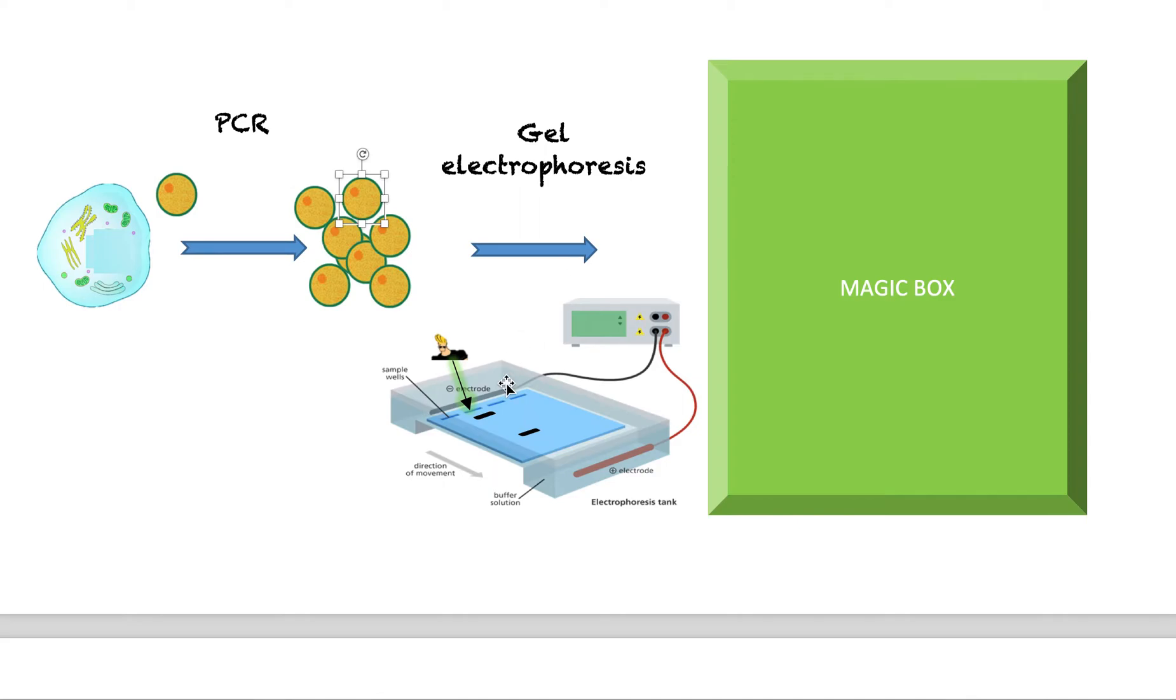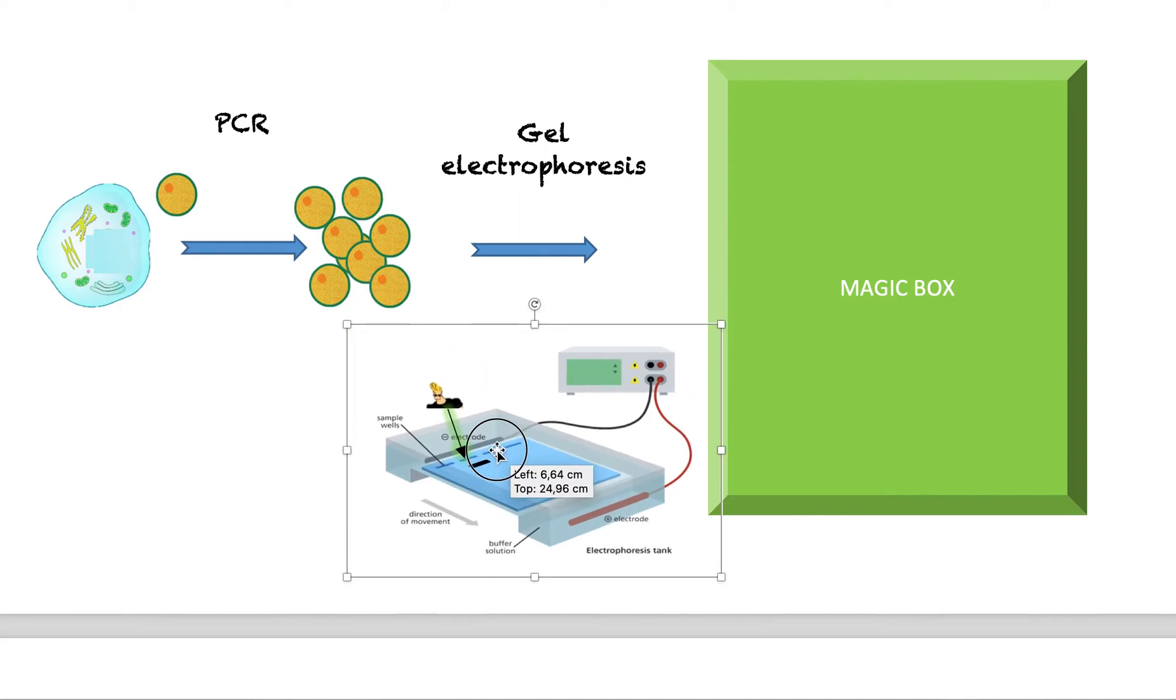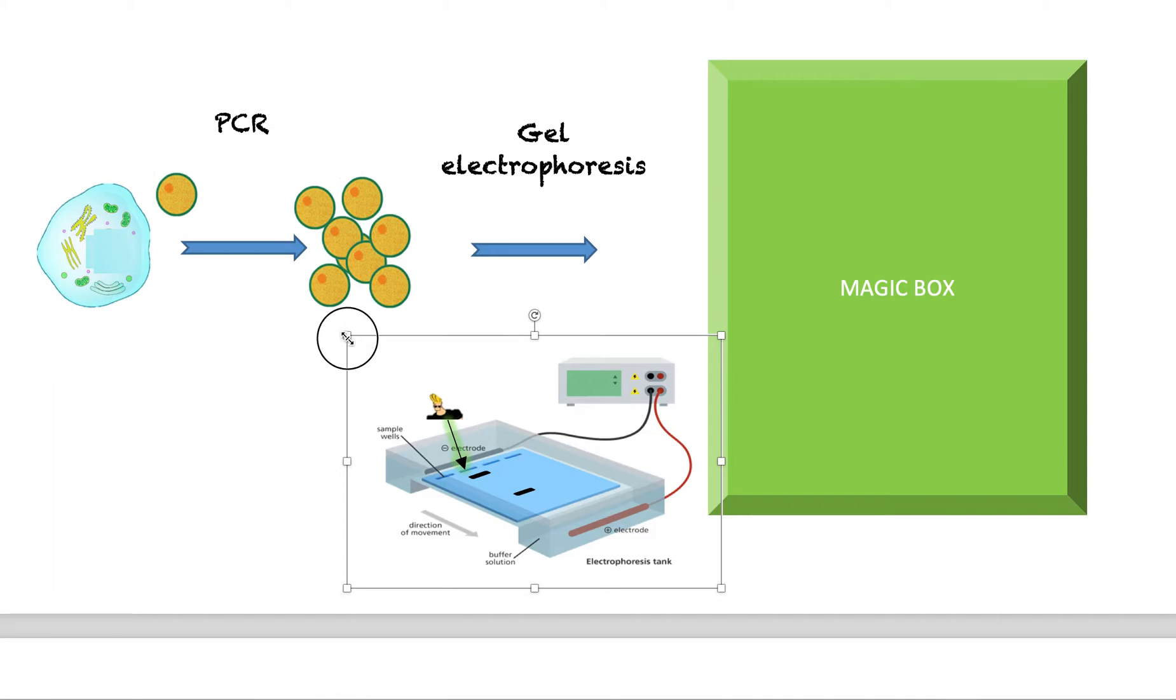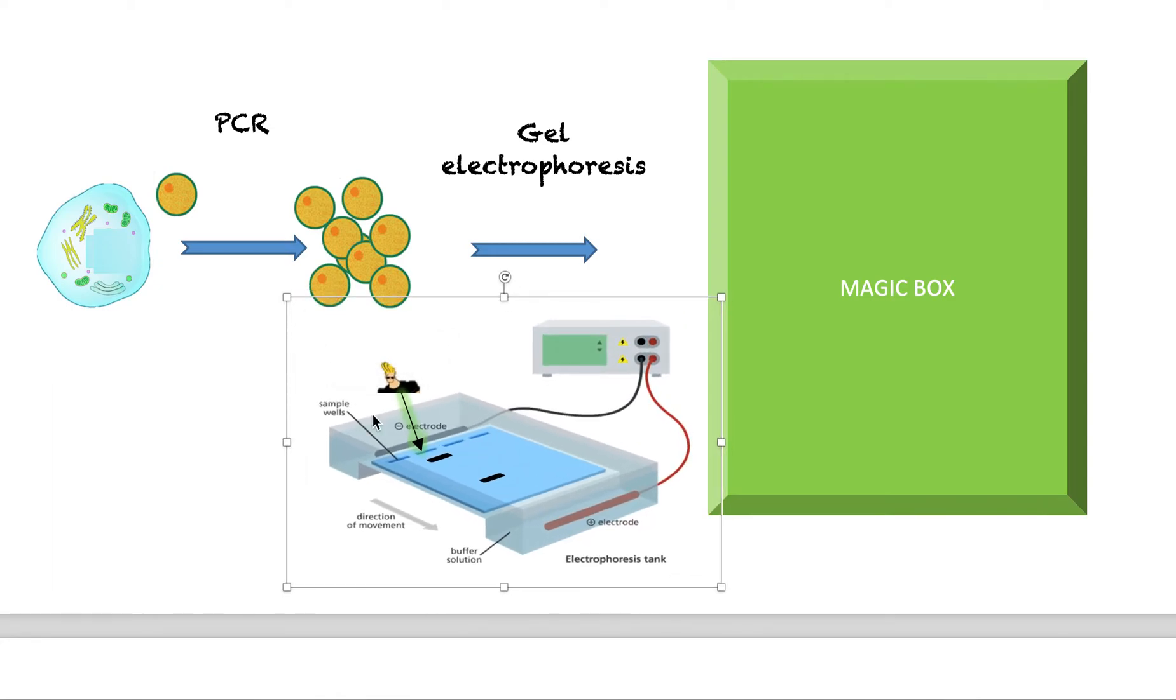So once we have the DNA, so say you're Johnny Bravo, and we put your DNA into this sample well, this little slit here, and we turn on this machine, what will happen is your DNA will travel and separate. So you can see here, Johnny Bravo's DNA separated into two. One piece here and one piece here. So how does this work?